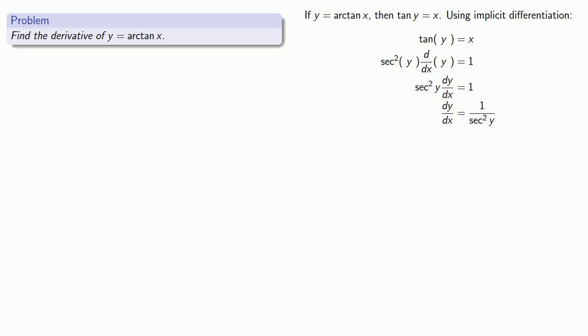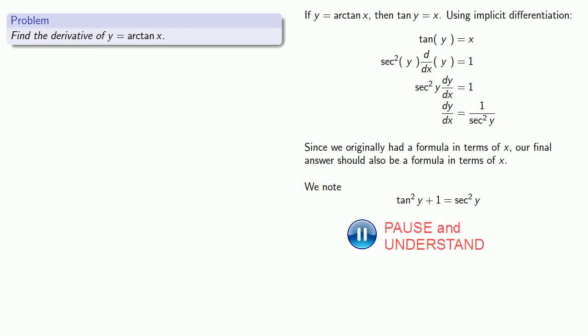And an important rule is since we originally had a formula y in terms of x, our final answer should also be a formula in terms of x. And so to simplify this expression 1 over secant squared y, I'm going to use a little trigonometry. The Pythagorean identity says that tangent squared y plus 1 is equal to secant squared y.